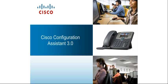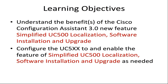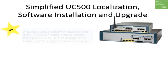Welcome to the Cisco Configuration Assistant 3.0 video series. In this video, you will learn about the benefits of a new feature in Cisco Configuration Assistant 3.0: the simplified UC500 localization software installation and upgrade feature. We will also demonstrate how you can configure this feature. Keep in mind that this feature is available in the Cisco Unified Communications 500 series when using the new Cisco Configuration Assistant 3.0.